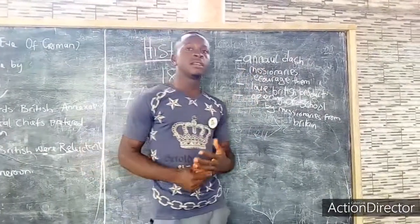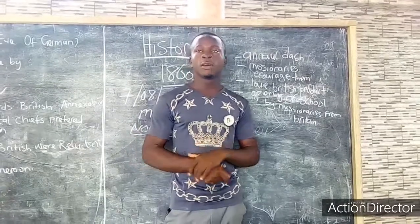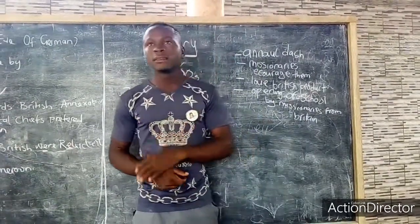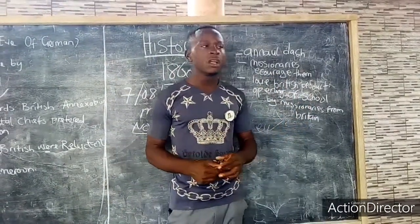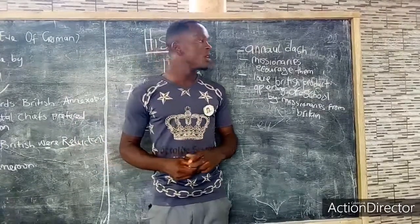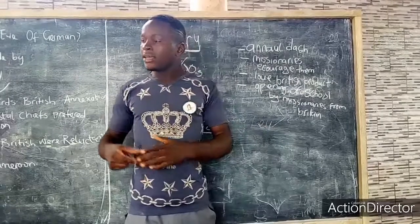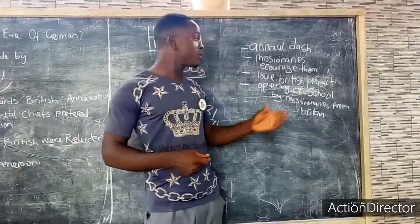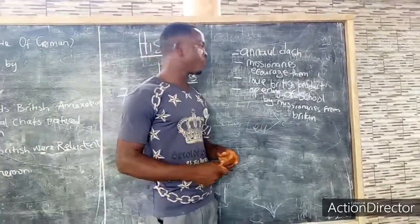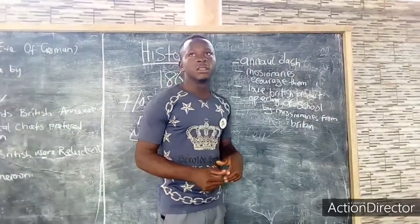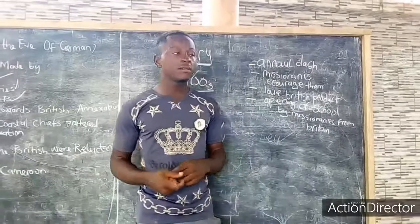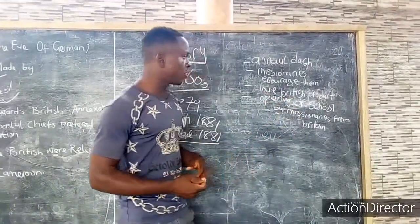Missionaries that came from Britain encouraged the Cameroon coastal chiefs to write letters seeking for the annexation of their territory. These missionaries came preaching the gospel and trying to abolish slavery and slave trade. As a result of their activities, they encouraged the Cameroon coastal chiefs to write letters seeking for annexation. The chiefs also loved British products like gold powder, which encouraged them to seek the British annexation of the territory.